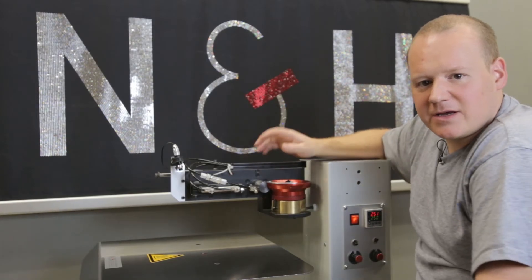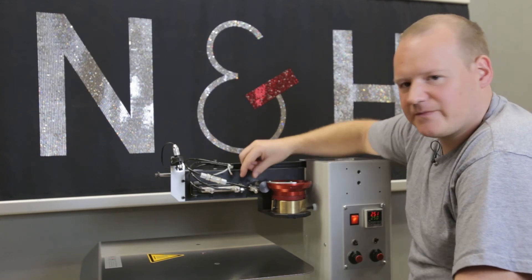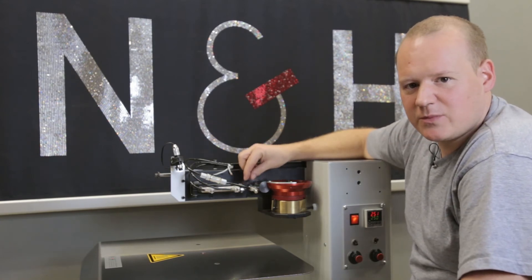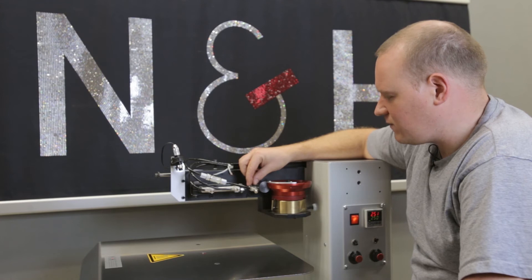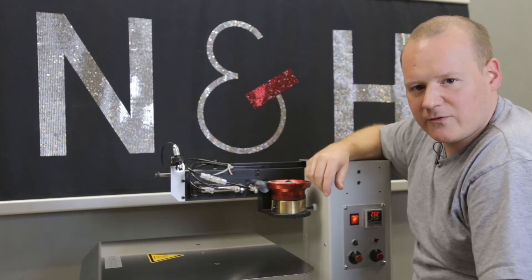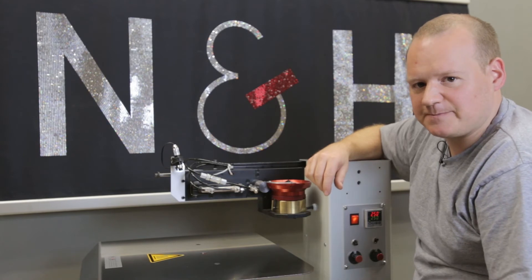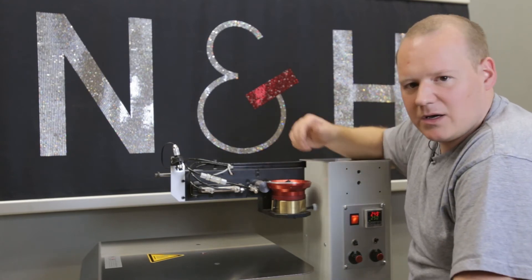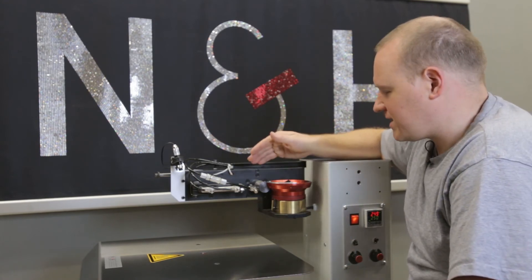The next thing is the nozzle from the machine. The nozzle that catches the stone and puts it on the fabric. We have four different types of nozzles, from small stones to big stones. I show you now how to change the nozzle.